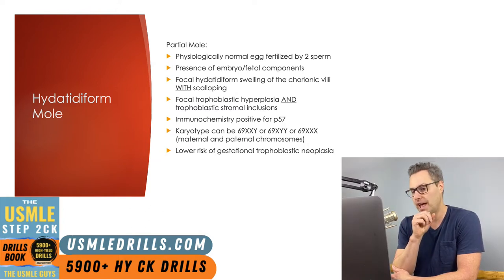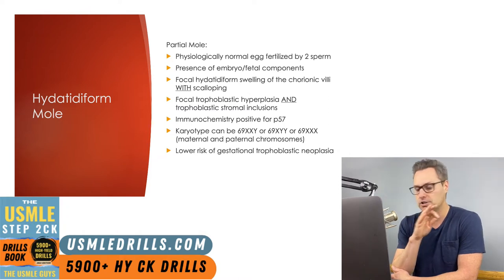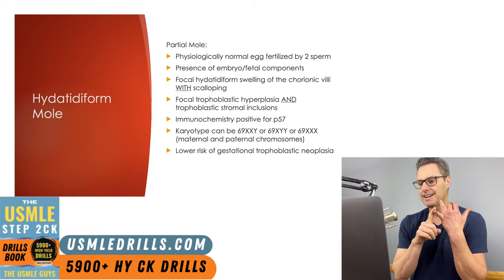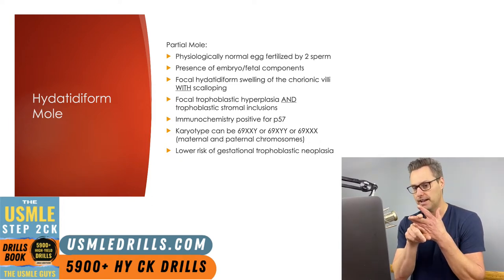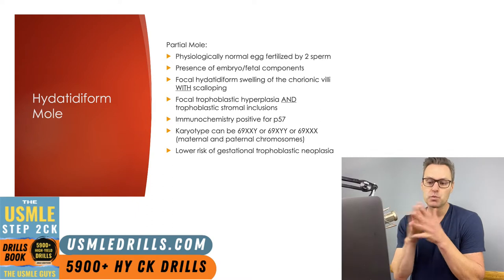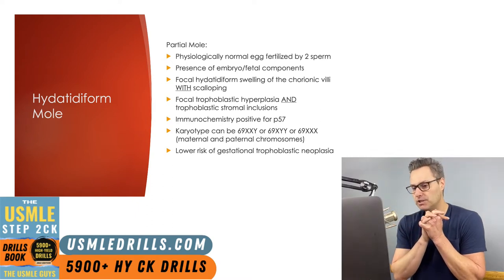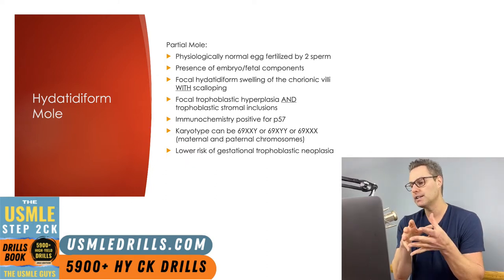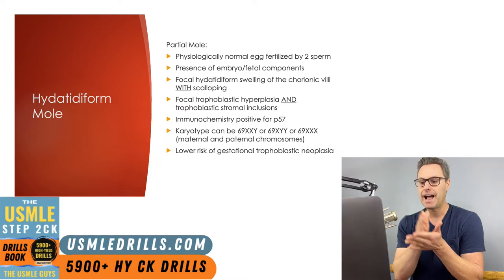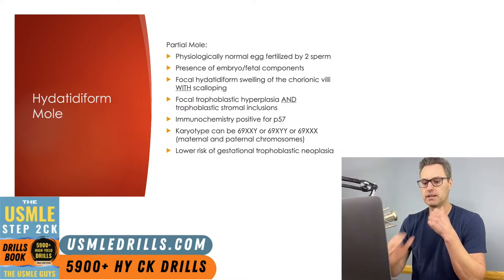Immunohistochemistry will be P57 positive in the partial mole, and as far as karyotyping goes, it's going to be either 69XXY, 69XYY, or 69XXX. The risk of gestational trophoblastic neoplasia in this type is much lower compared to the complete, with only around 1 in 20 or less resulting in gestational trophoblastic neoplasia as a result of the partial molar pregnancy.